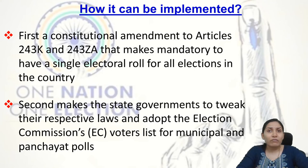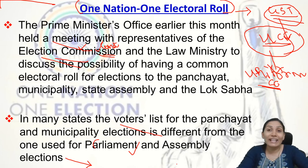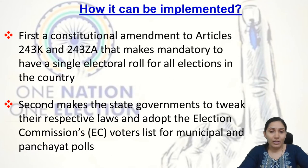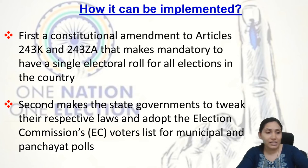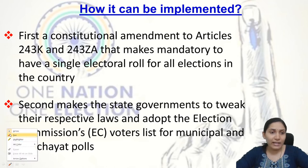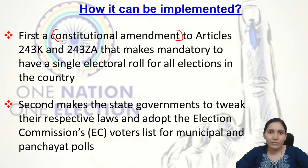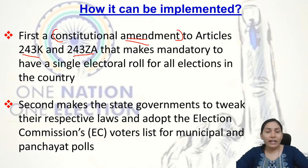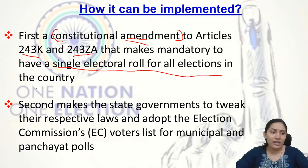Now let's see how One Nation One Electoral Rule can be implemented. First, it requires a constitutional amendment — one or more provisions of the Constitution need to be amended. Articles 243K to 243ZA would need to be amended, as these articles make it mandatory to have a single electoral role for all elections in the country.